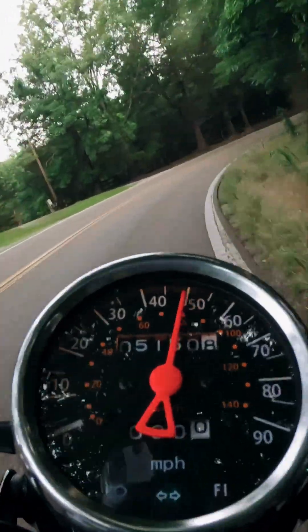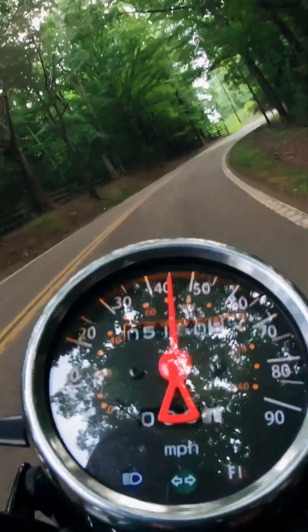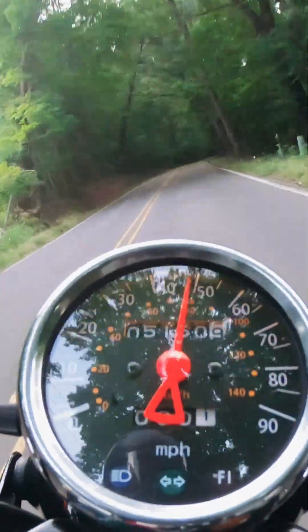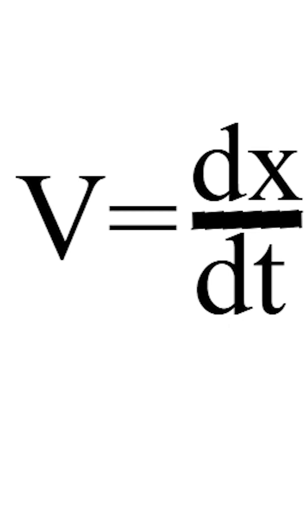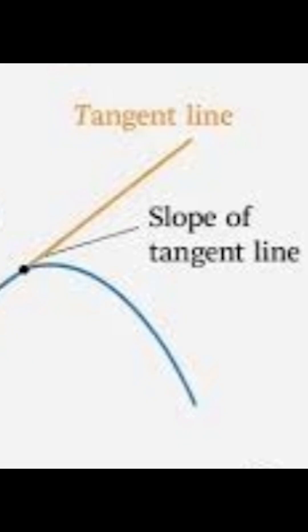Now, instantaneous velocity is the velocity at one exact moment. It's what your speedometer shows, your real-time rate of change of position. Mathematically, v equals dx over dt. It's the slope of the tangent line on a position-time graph.